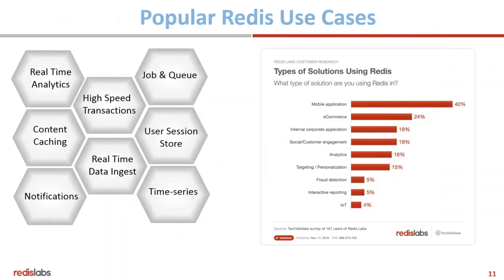As a result of Redis's versatility, it is used in a number of popular use cases including high-speed transactions, real-time data ingest, job and queue management, and user session store, but also analytic use cases. Very often Redis is used for analytic scenarios, and the types of solutions using Redis include not just mobile, e-commerce, corporate, or social applications, but also analytics, targeting and personalization applications, fraud detection, interactive reporting, and more.